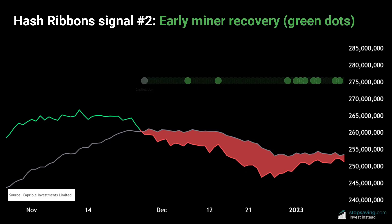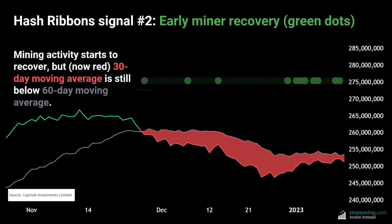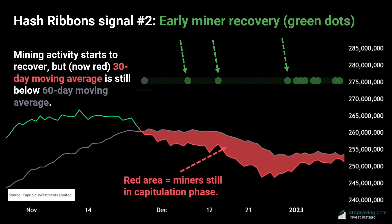Moving on to the second stage of the Hash Ribbons indicator: the early miner recovery signs. With the hash rate now lower after the miner capitulation signal, mining activity starts to pick up again. As a result, the hash rate starts to recover, which can trigger a few green dots to show up in the chart. But since the 30-day moving average is still below the 60-day moving average, miners are still in the capitulation phase, as shown by the red area.